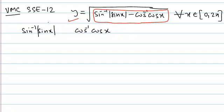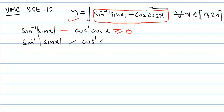Greater than or equal to 0 means sin⁻¹|sin x| should be greater than or equal to cos⁻¹(cos x). So we'll solve this inequality graphically by drawing the graphs of both functions.